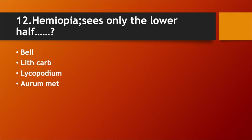Hemiopia, where only the lower half is seen: Option A. Belladonna. Option B. Lithium carb. Option C. Lycopodium. Option D. Aurantium. Answer: Option D. Aurantium.